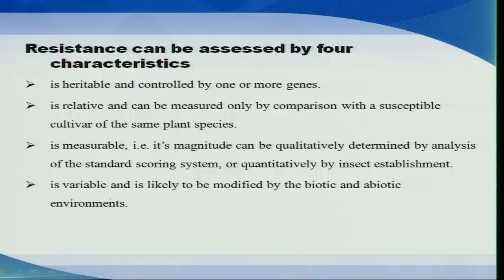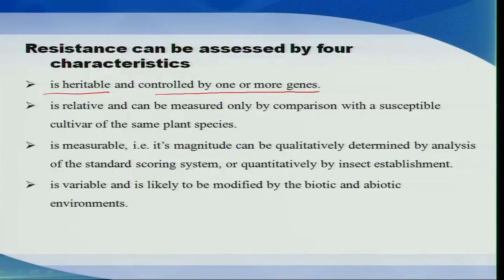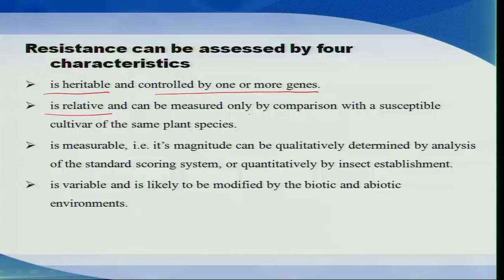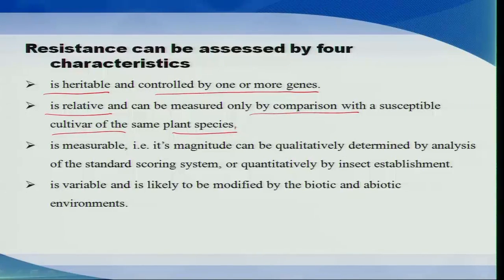Now, what is resistance and how can it be assessed? Resistance in a crop can be assessed by four important factors. First, the characters should be heritable and controlled by one or more genes, so that the resistance character exhibited by the plant against a pest attack is transferred to the next generation. Second, the character is relative and can only be measured by comparison with a susceptible cultivar of the same plant species.